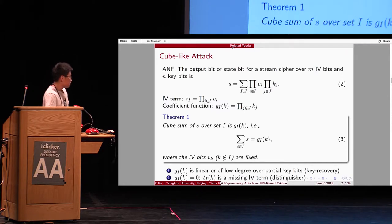So, in cube attack, if the coefficient function is linear with partial case, it is a key-recovery attack. Or, if it is zero, then it is a missing every term. We can use it as a distinguisher.